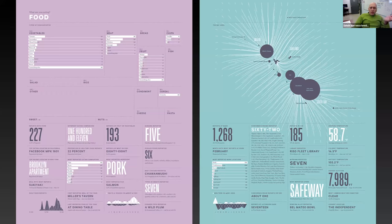Food — again, quantifying everything from veggies, meat, what you eat, etc. Those two work side by side — they have the same layout and yet they represent totally different things. Two-color print on the left, two-color print on the right-hand side.